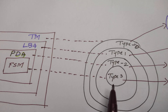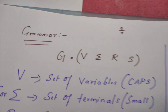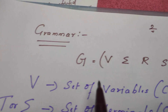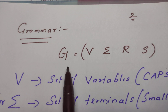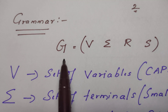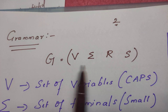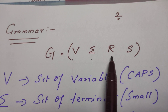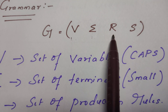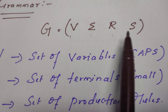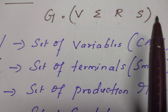Now let us try to understand what is a formal grammar. A formal grammar is defined by four tuples. In general, grammar is defined by four tuples: V, Sigma, R, S. In some other textbooks they may follow V, T, P, S. The letters might be different but it contains these four tuples only.